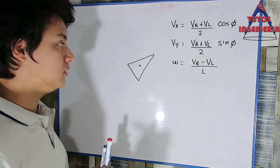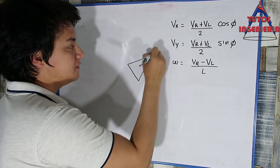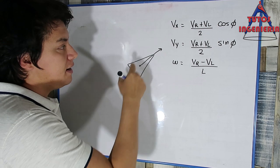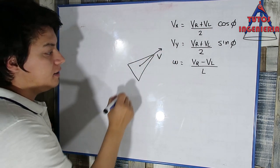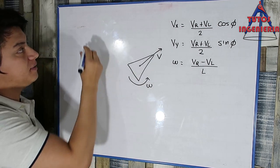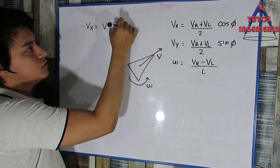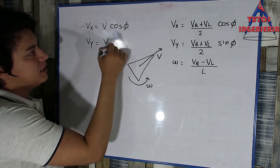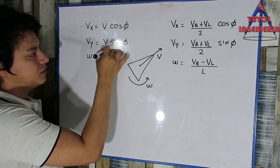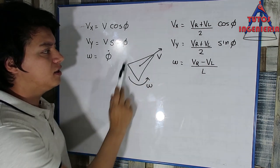That system describes a differential model with two wheels. Now we are going to describe another model — the unicycle model — where the car only has a linear velocity V and an angular velocity omega. The equations that describe this system are: velocity in X equals the linear velocity times cosine phi, velocity in Y equals the linear velocity times sine phi, and omega is the rate of change of the angular position.